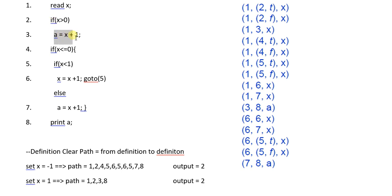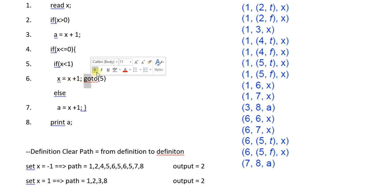Rather we go to line number four. This predicate logic is true because minus one is less than zero, so we go to line number four. It is again true as minus one is less than one, so we go to line number six and increment x by plus one. Minus one plus one becomes zero. We go back to line number five — zero is again less than one, so we come to line number six again.